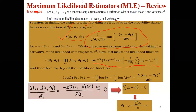For the exponent of e, the constant 1 over 2 theta 2 comes out, and the summation responds to x_i minus theta 1 squared. When we take the log-likelihood: the power of theta 2 brings minus n over 2 times log of theta 2, the power minus n over 2 brings minus n over 2 times log of 2 pi, and the natural log of e equals 1. So the log-likelihood function is fully expressed.